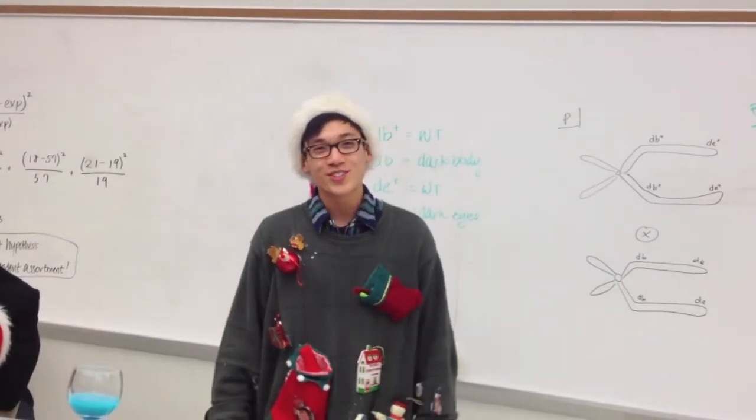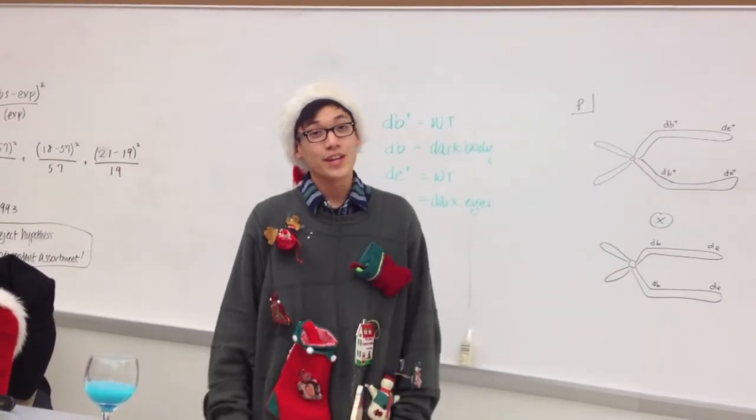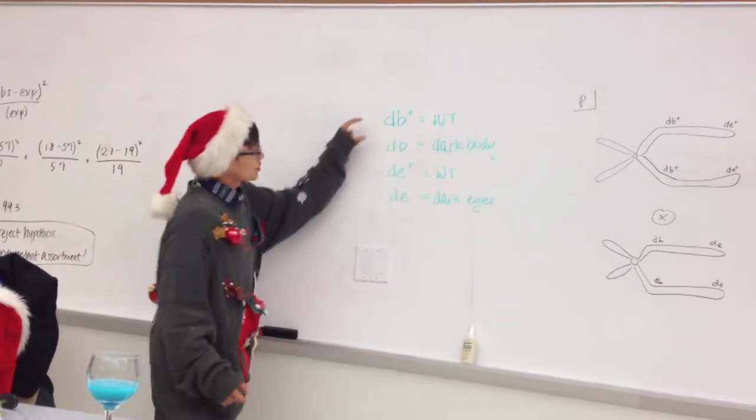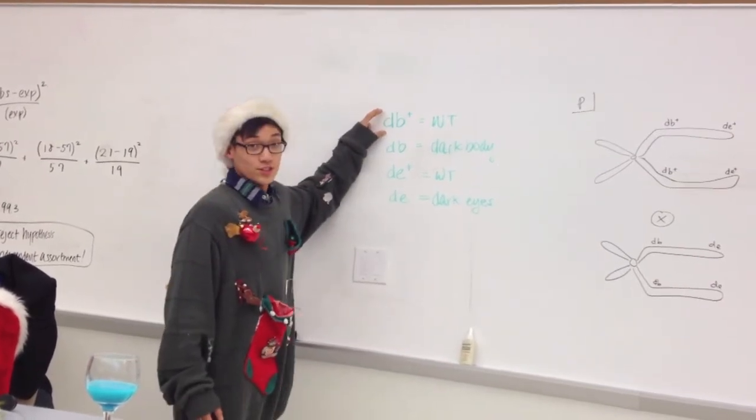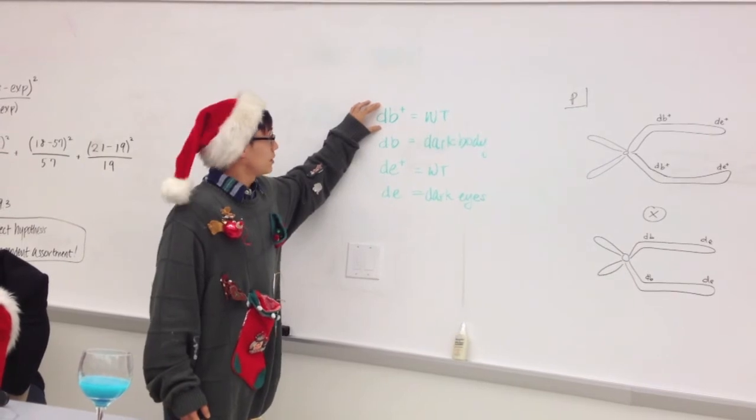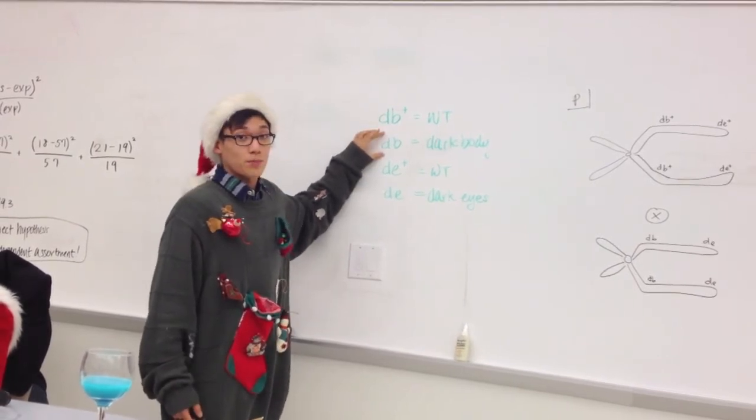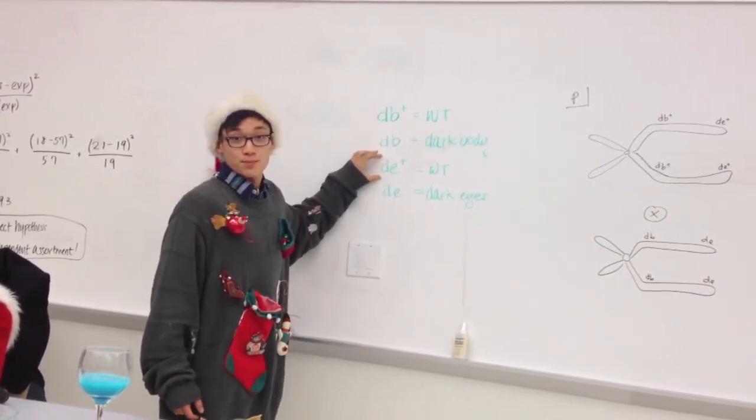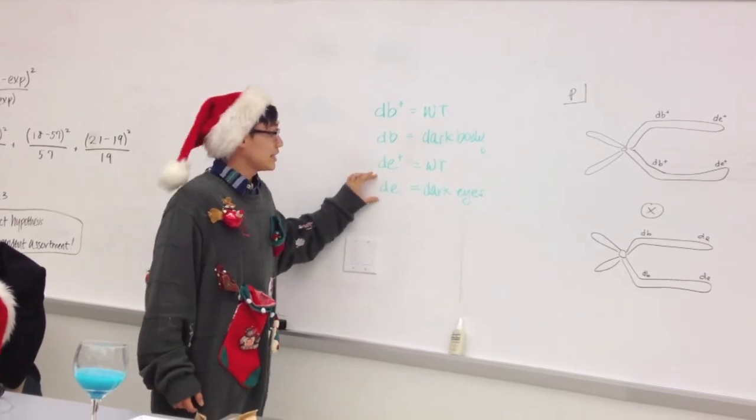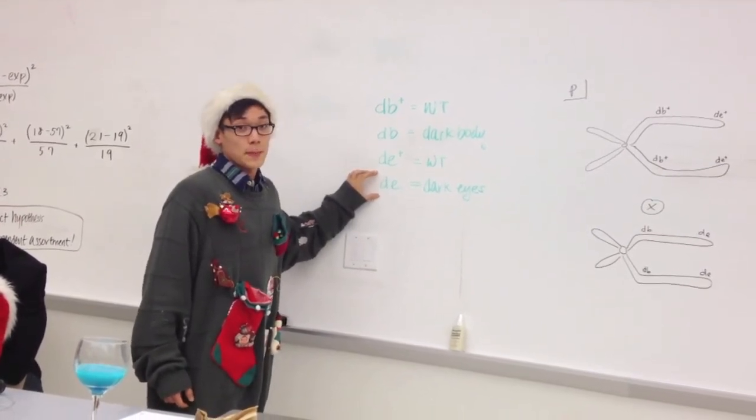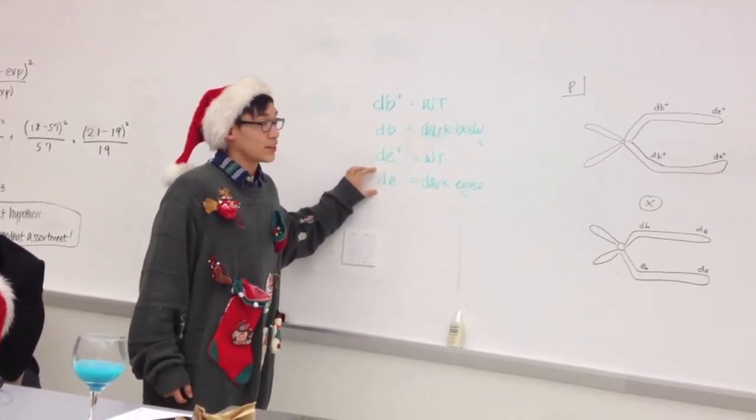According to the nomenclature, we assigned symbols to each of our alleles. DB plus, meaning wild type. DB, meaning dark body. DE plus, meaning wild type. And finally, DE, meaning dark eyes. These came in handy later on.